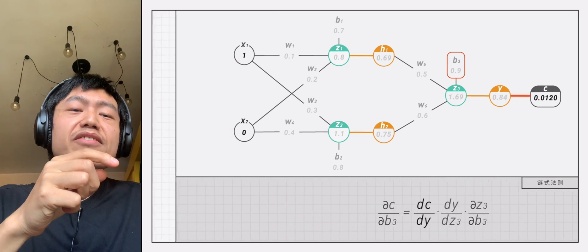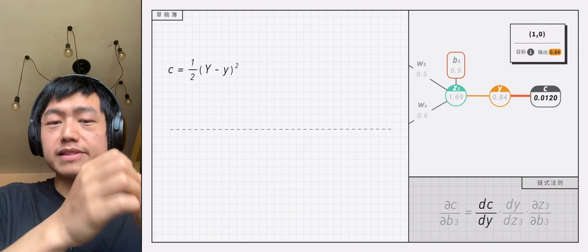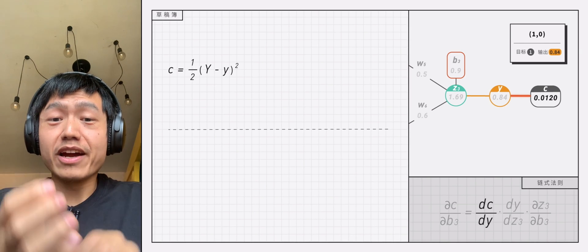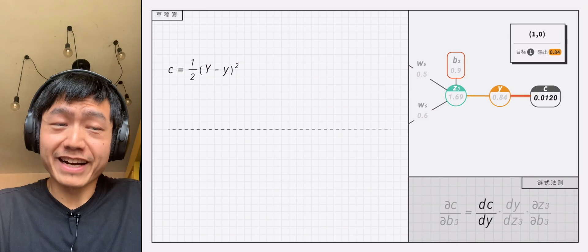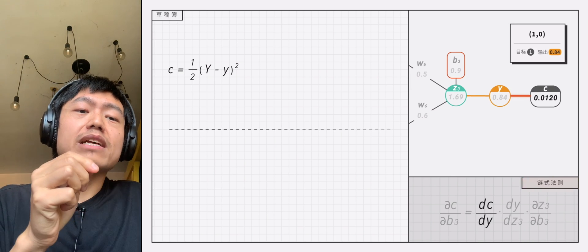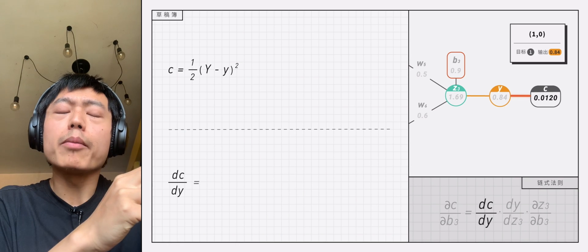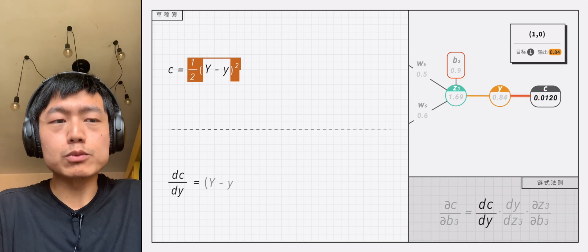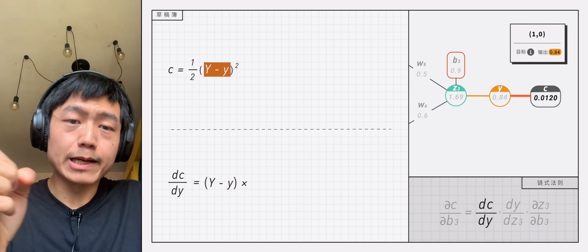the first term dc divided by dy can be derived from this formula. In order to deduce it, we need to use the chain rule again. dc divided by dy equals the outer derivative of uppercase Y minus lowercase y multiplied by the inner derivative of negative 1, that is negative 1 times uppercase Y minus lowercase y equals minus 0.16.